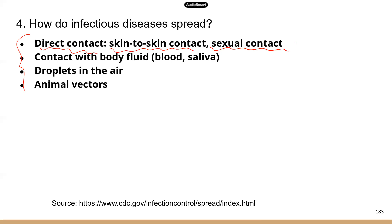Contact with body fluids — for example, blood and saliva — is another way for diseases to spread. HIV can be spread by contact with someone's blood. Droplets in the air or aerosols in the air: with COVID-19, we became very alert about what's in the air. Droplets can travel up to six feet, which is why we had the six-foot social distance rule. But aerosols carrying pathogens can travel a lot farther and are inhaled by healthy people, which is how they get exposed.